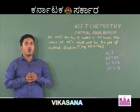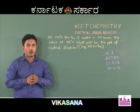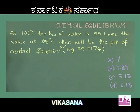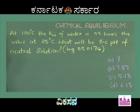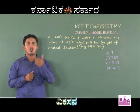This problem is related to the ionic product of water. At 100 degrees Celsius, the ionic product of water is 55 times the value at 25 degrees Celsius. What will be the pH of a neutral solution? Option A: 7, Option B: 7.87, Option C: 5.13, and Option D: 6.13.